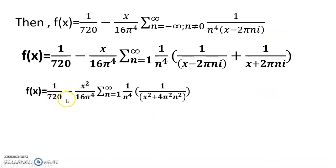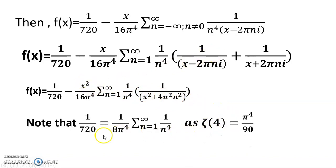And f(x) equals 1/720 minus x²/(16π⁴). I am just calculating, so I get x²/(4πn²), and this x remaining x, x into x equals x². Here, simple calculation, and note that 1/720 equals 1/(8π⁴) summation n equals 1 to infinity 1/n^4, as ζ(4) equals π⁴/90.